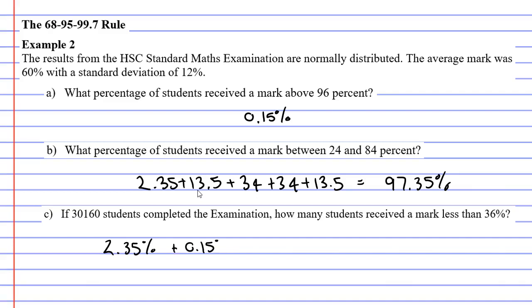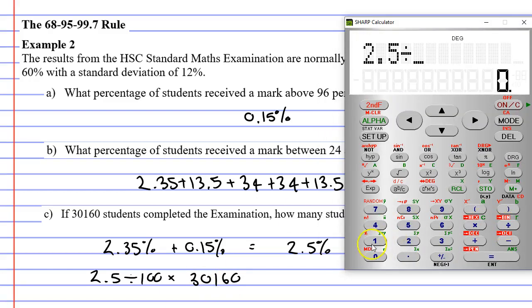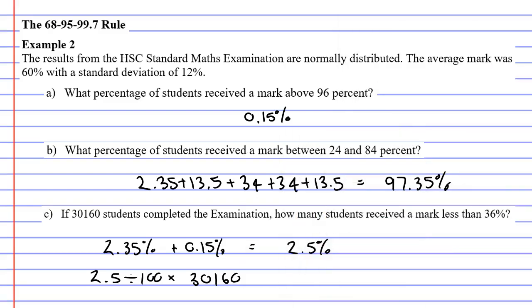When we add these together we're going to get 2.5%, so 2.5% of the students received a mark less than 36%. We need to find 2.5% of 30,160. To do that we're going to go 2.5 divided by 100 first and then multiply this by 30,160. 2.5 divided by 100 times 30,160 gives us 754. So we can assume that 754 students received a mark less than 36%.